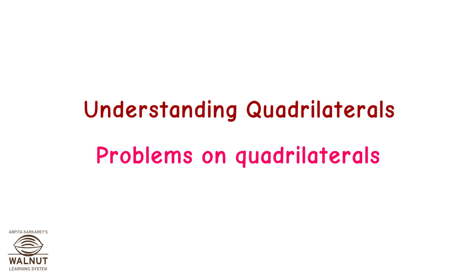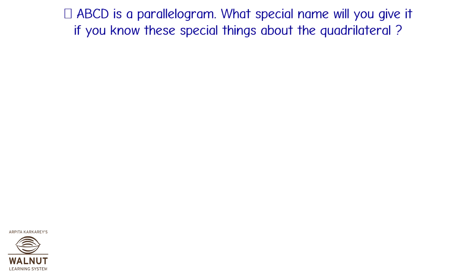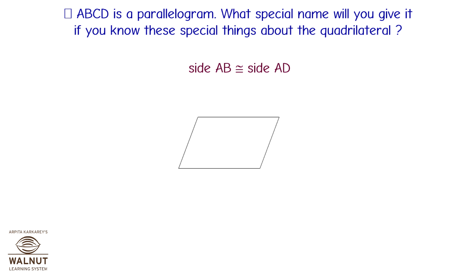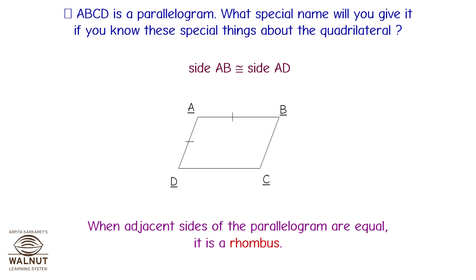Understanding Quadrilaterals: Problems on Quadrilaterals. Quadrilateral ABCD is a parallelogram. What special name will you give it if side AB is congruent to side AD? When adjacent sides of the parallelogram are equal, it is called a rhombus.